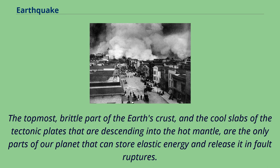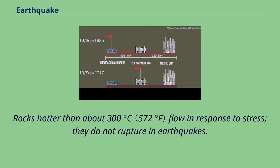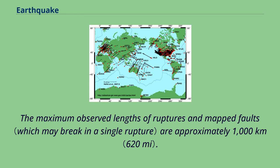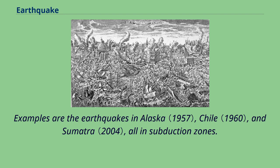The topmost, brittle part of the Earth's crust, and the cool slabs of the tectonic plates descending into the hot mantle, are the only parts of our planet that can store elastic energy and release it in fault ruptures. Rocks hotter than about 300 degrees Celsius flow in response to stress — they do not rupture in earthquakes. The maximum observed lengths of ruptures and mapped faults are approximately 1,000 kilometers, with examples in Alaska, Chile, and Sumatra, all in subduction zones.